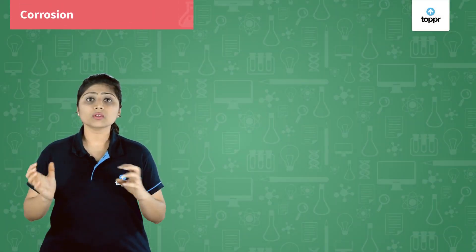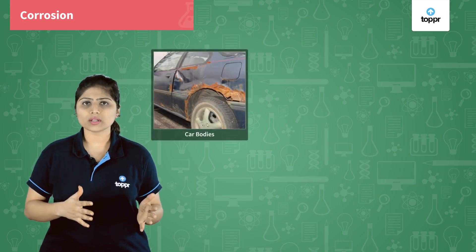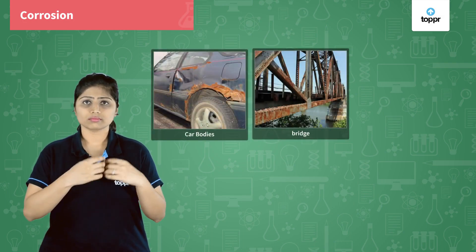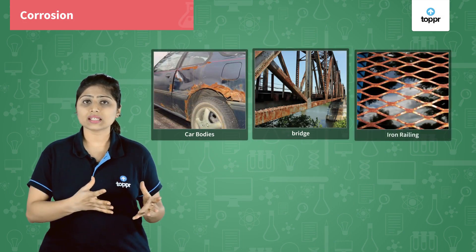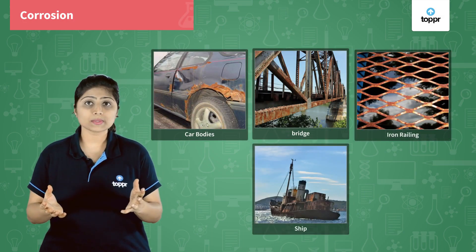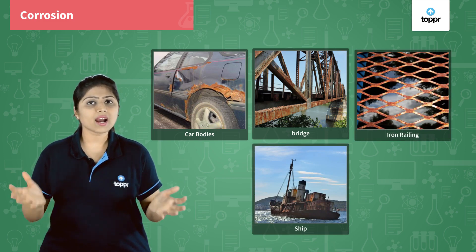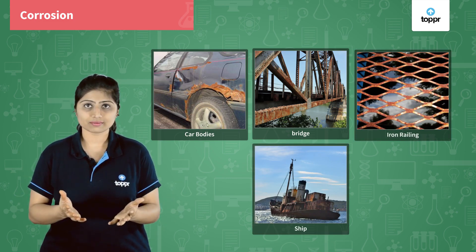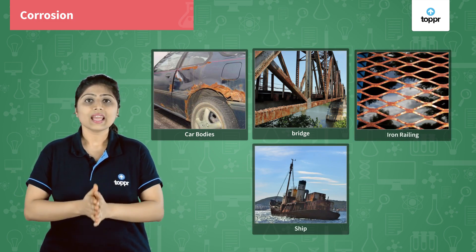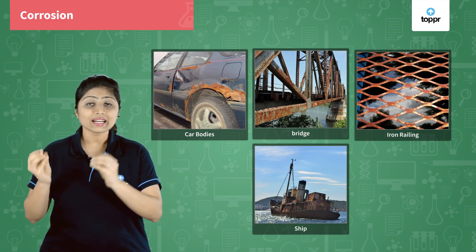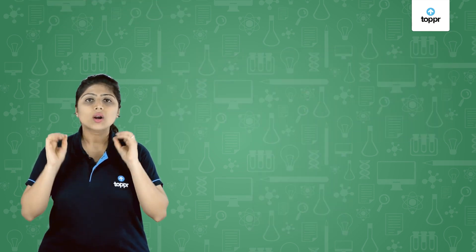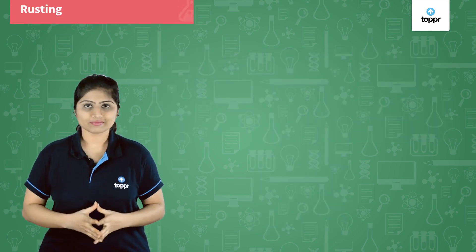You must have observed that corrosion causes damage to car bodies, bridges, iron railings, ships, and many other materials made up of metals. Among these, iron's corrosion is very common, which is called rusting.